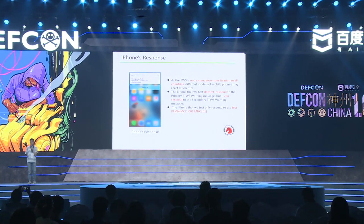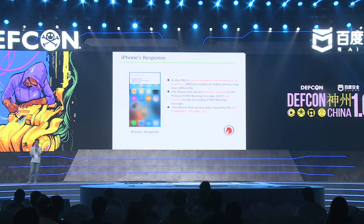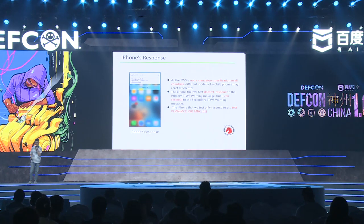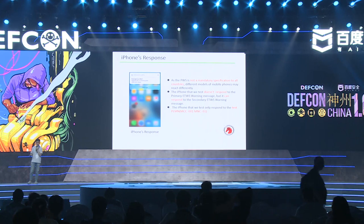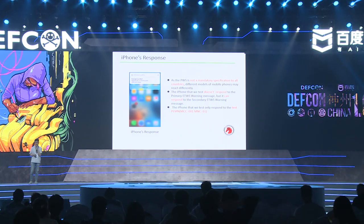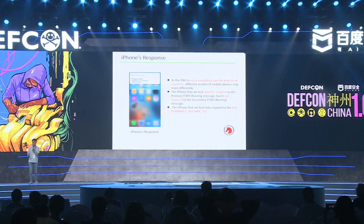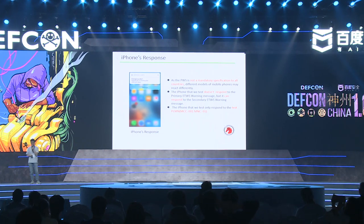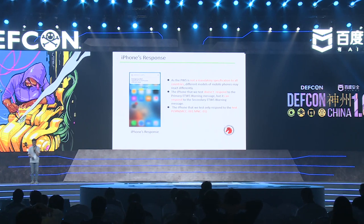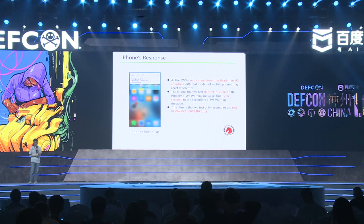All the tests we have done are based on the Google Pixel, but we have also tested on other phones. Because China doesn't support PWS, domestic Android phones like Xiaomi and Huawei don't support the public warning system — they have removed the function from the operating system. China version iPhones will only respond to warning messages under a test network with MCC 001 and MNC 01, not under China Mobile, China Unicom, or China Telecom networks. So China doesn't need to worry about fake warning messages.